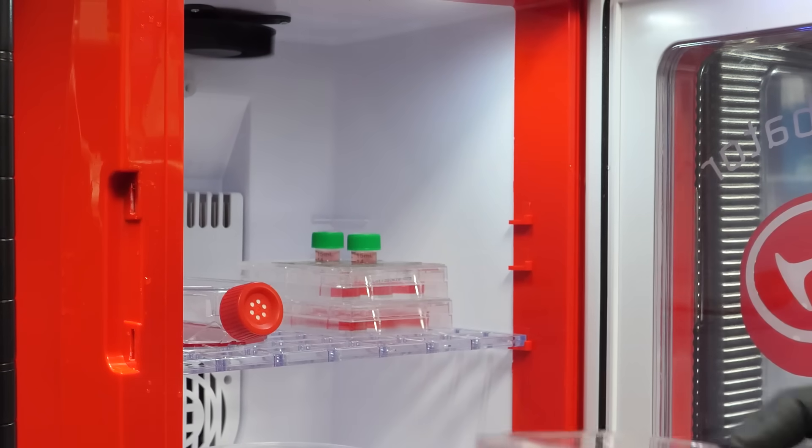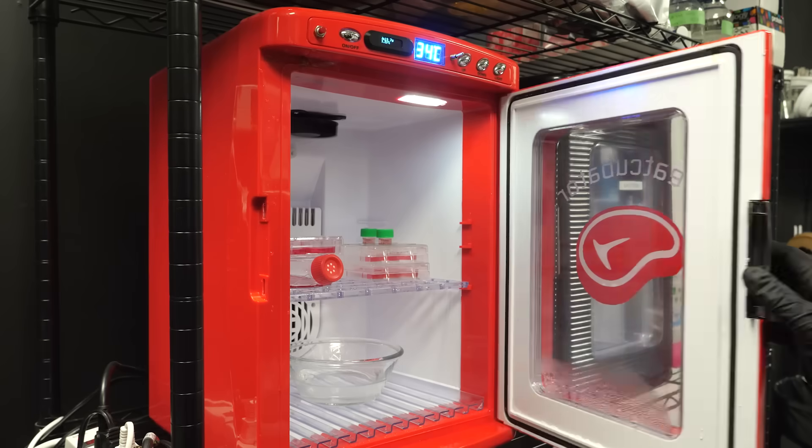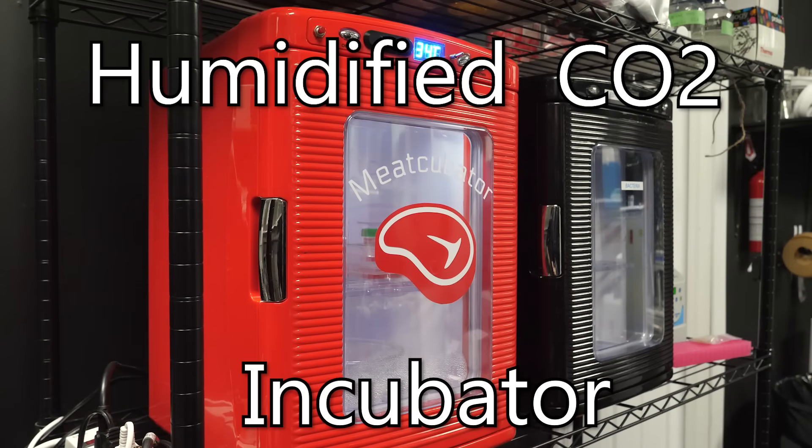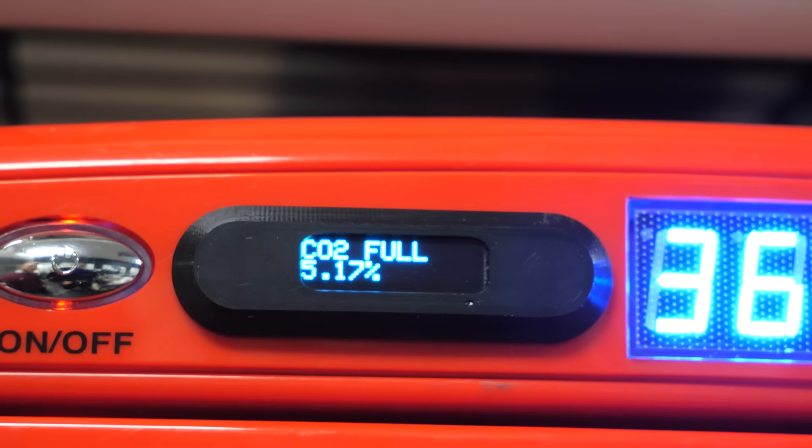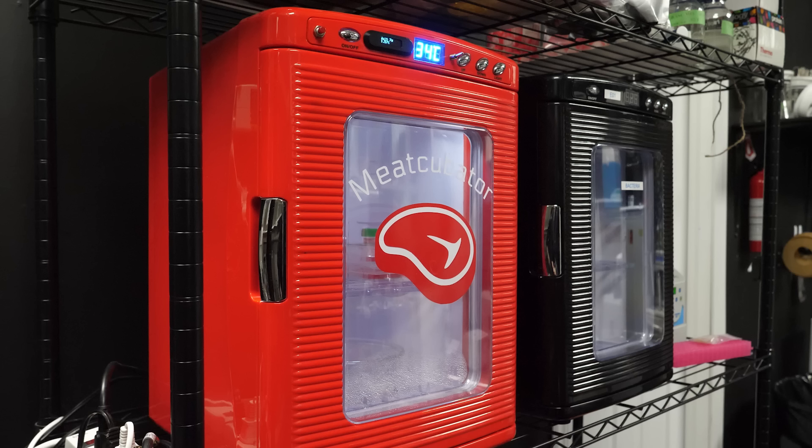This time, rather than just letting the dish sit in the hood, I put it into the meat-cubator for 20 minutes to equalize. The meat-cubator is actually called a humidified CO2 incubator, and it fills its inner atmosphere with 5% CO2. The idea is that the CO2 will diffuse into the liquid and help hold the pH at the correct level. By letting the plate sit in here for a while, the media in the wells will be at the perfect level for the cells when we add them.